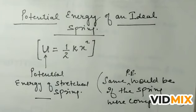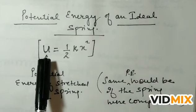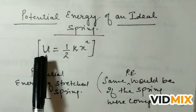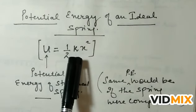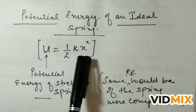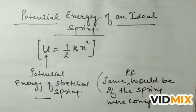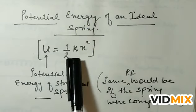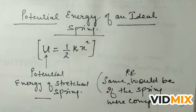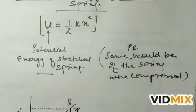Hello students of class 11, once again with a new video. In this video we are going to continue the topic from the previous video about the potential energy of a spring. So continuing that topic: the energy or work done of a stretched spring is equal to 1/2 kx², where k is the spring constant or force constant and x is the displacement. The potential energy of a compressed spring is also equal to 1/2 kx².